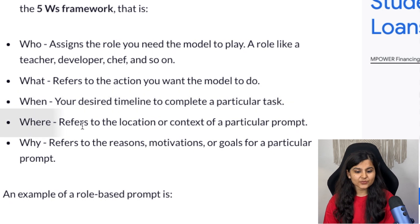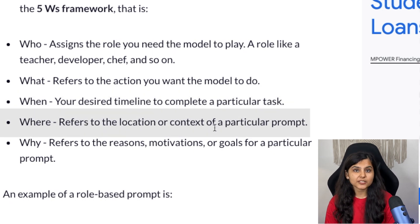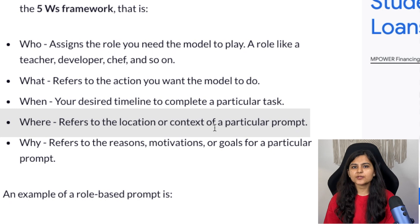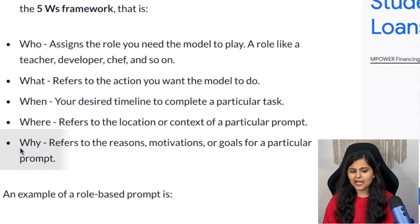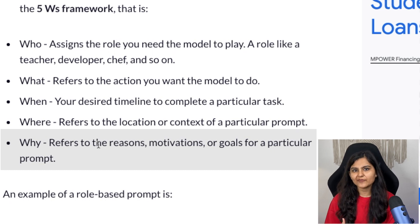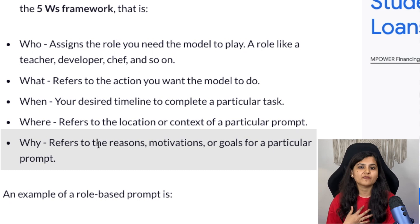The next W is 'where,' which refers to the location or context of a particular prompt — in our case, whatever resources we want, whether video resources or anything else. The last W is 'why,' which refers to the reason, motivation, or goals for a particular prompt. Why are we asking? Because we want to become a web developer.